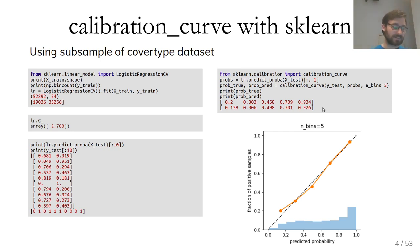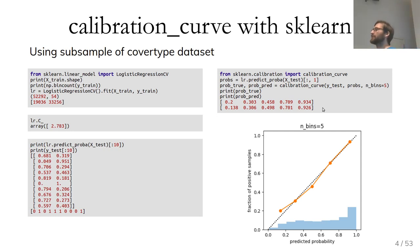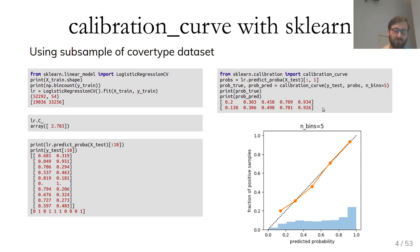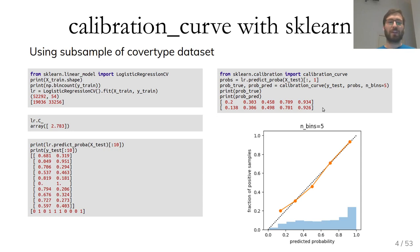If this classifier says a point is 30% likely to be class 1, then in 30% of cases it will actually be class 1. In general, people find logistic regression is often pretty well calibrated. You can also compute a metric on how calibrated the classifier is — one way is to measure the distance of the points from the diagonal. Because they're closely matching the diagonal here, this classifier would have a very good score.